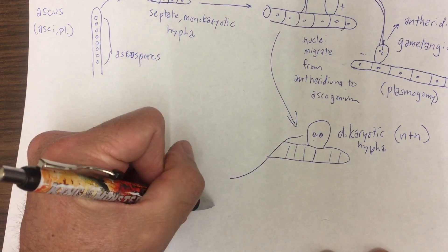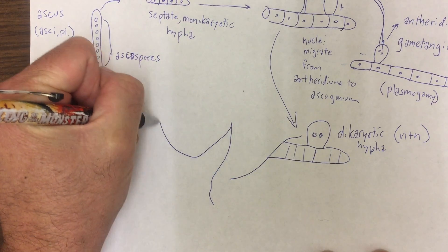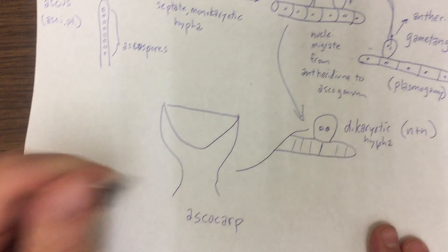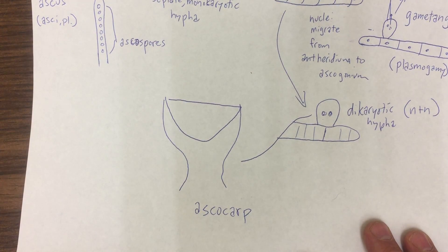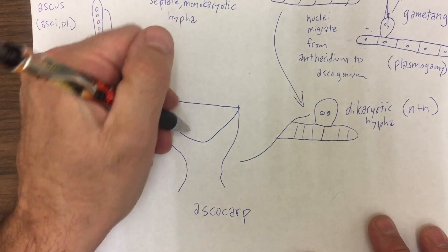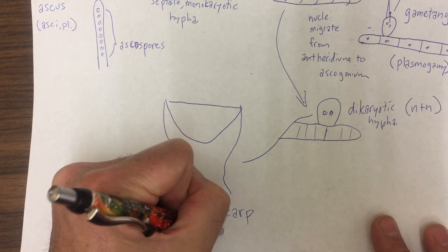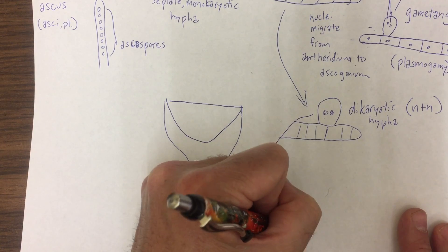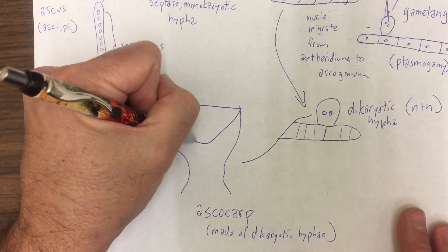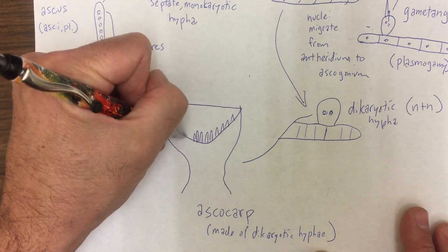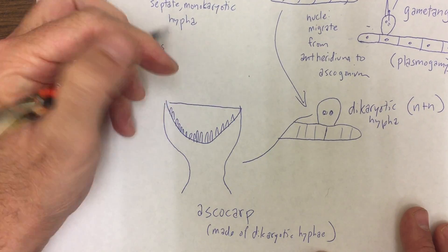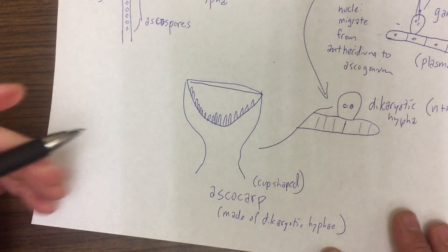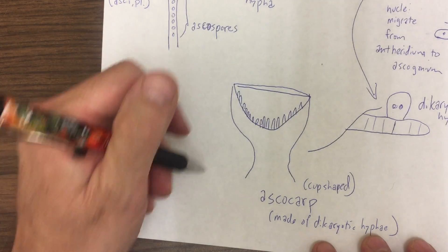This dikaryotic hypha can grow and divide into a structure called an ascocarp. And an ascocarp is very similar to a basidiocarp that forms a mushroom, only instead of producing basidia, it produces asci. This is typically made up of dikaryotic hyphae. And in the base of this cup-shaped structure down here of this ascocarp, we've got all these little structures that are going to become the asci.